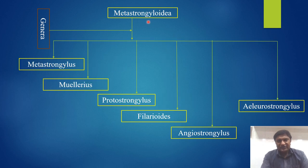The Metastrongylidae have the following genera: number one is Metastrongylus, Muellerius, Protostrongylus, Filaroides, Angiostrongylus, and Aelurostrongylus.